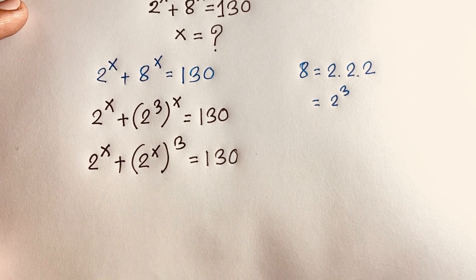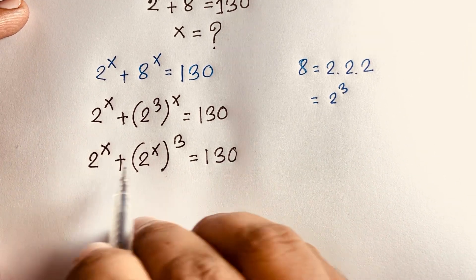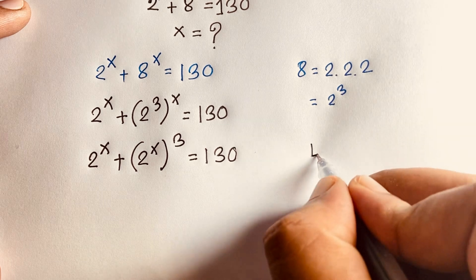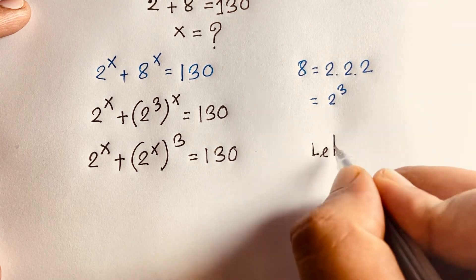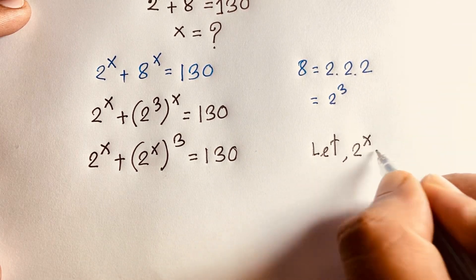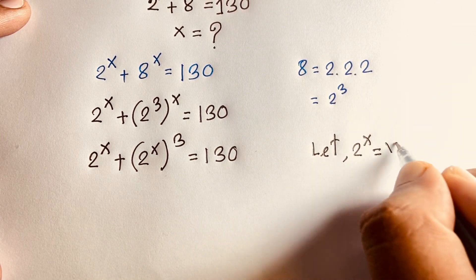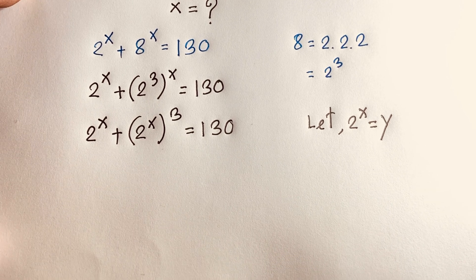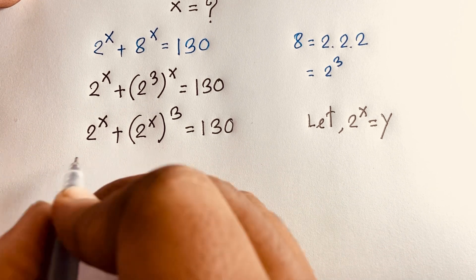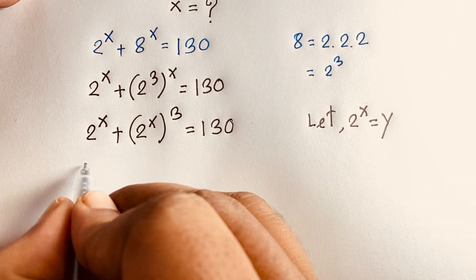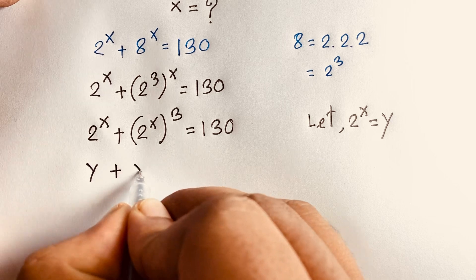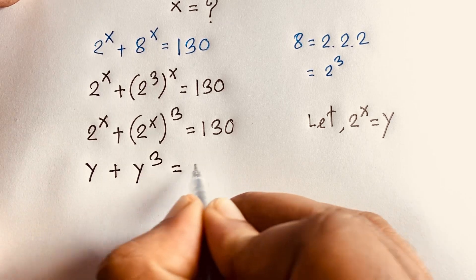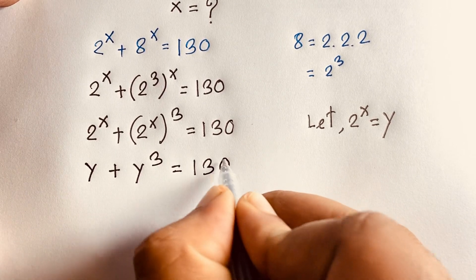So we'll find out it is a nice equation. In this expression, I move the x inside the bracket. So it will be 2 to the power x plus 2 to the power 3x is equal to 130. Here, 2 to the power x and 2 to the power x is common. So let 2 to the power x equal y.